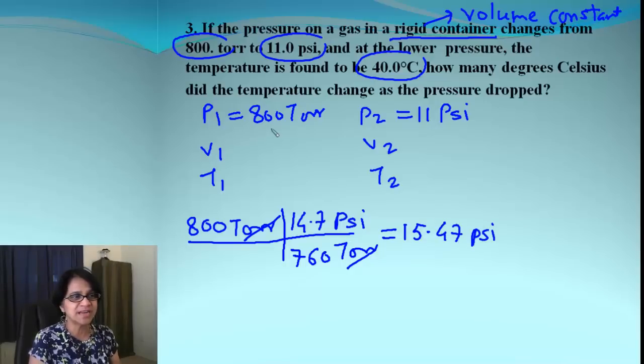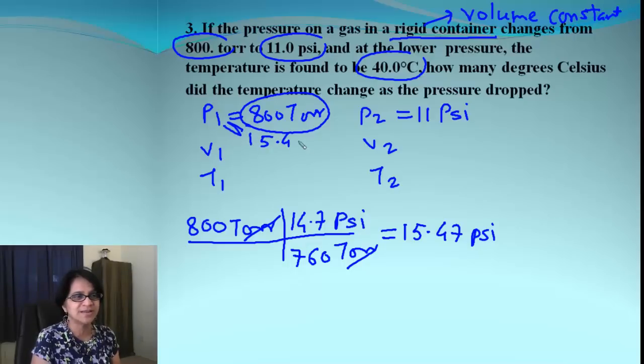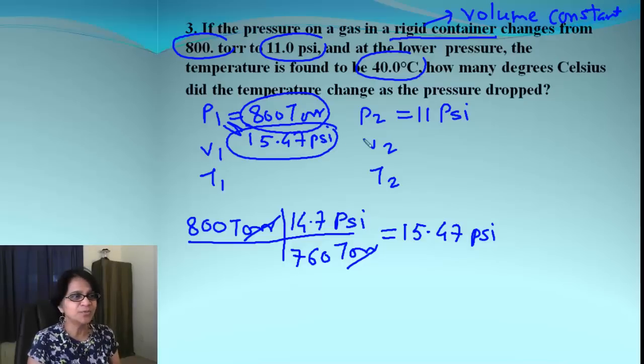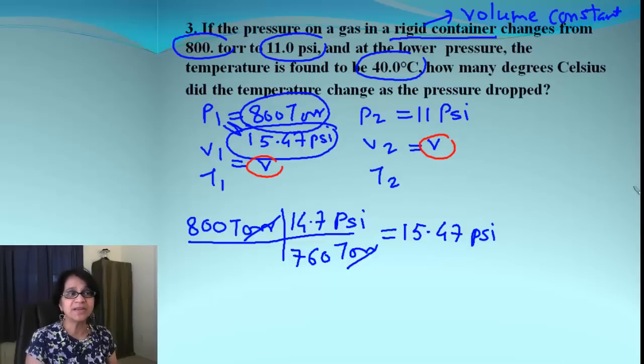So instead of using that 800 now, you will be using the new value which is 15.47 psi. Volume is going to be same. So I can put V1 and V2 both equal to V. That will be exactly the same value.